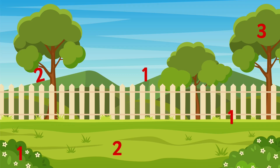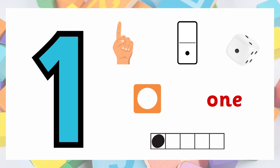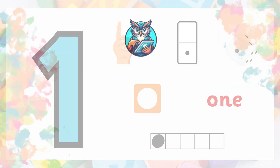Now let's see if you can identify number one. Can you find number one? Here we have one on the hill. Can you find another one? Here is one in front of the fence. Can you find one more? There is one in the bush. Well done identifying number one in different ways!